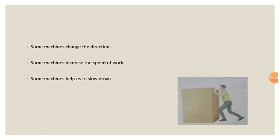Some machines change the direction. Some machines increase the speed of work. Some machines help us to slow down. In the picture, a person is applying a force to change the direction. So as a result of applying force, the position of the object is changed.